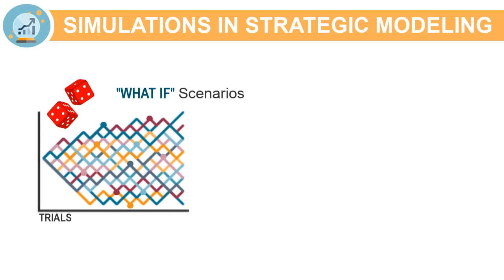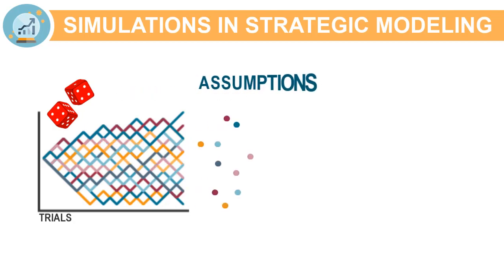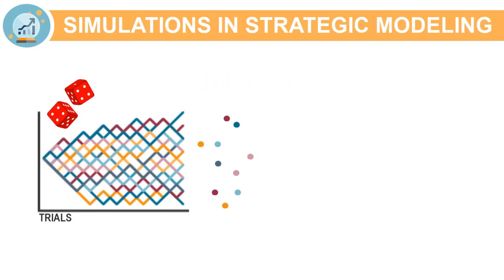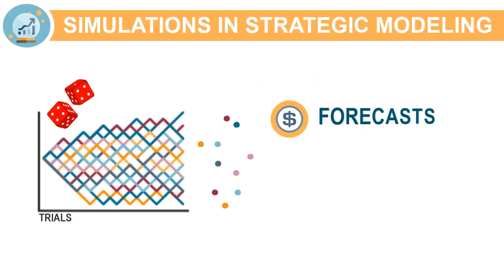Before running simulations, you must first identify the uncertain inputs in your model. These are called assumptions, and you describe the uncertainty for each one by selecting a probability distribution from a gallery. You then identify the key outputs of interest in your model. These are called forecasts.